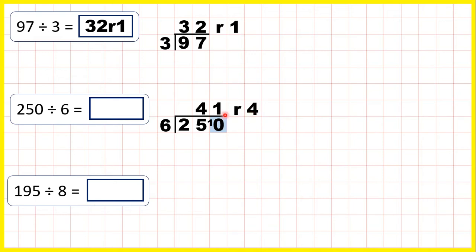The remainder is 4 because 1 times 6 is 6, but then we need 4 more to get to 10. So 250 divided by 6 is 41 remainder 4.